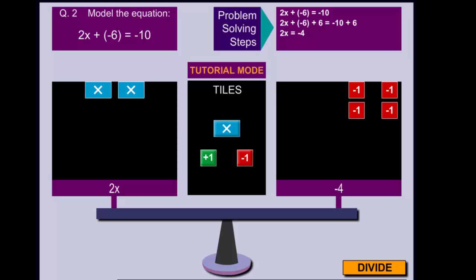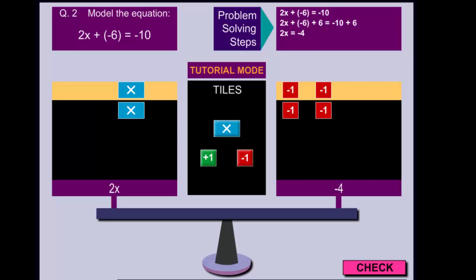Two x tiles together have a value of negative 4. We need to find the value of 1x. This is a division problem, because we need to divide the tiles into two equal groups. Now the tiles are divided into two groups of equal value. I only want to look at one group, so I'm going to get rid of the extra tiles. We see that the value of x is negative 2.